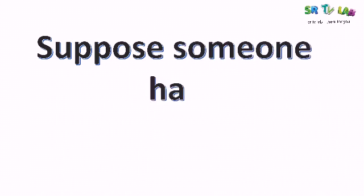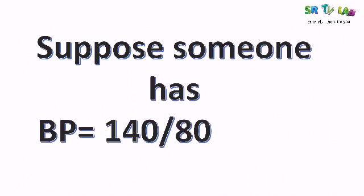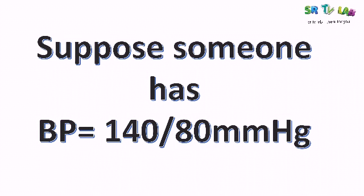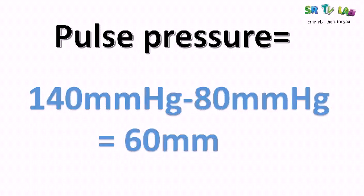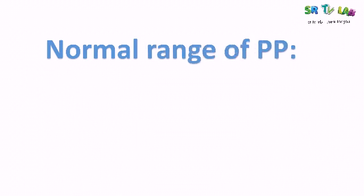Let's take an example. Suppose someone has a blood pressure of 140 over 80 mmHg. The pulse pressure will be 140 minus 80, which equals 60 mmHg. This is the pulse pressure.